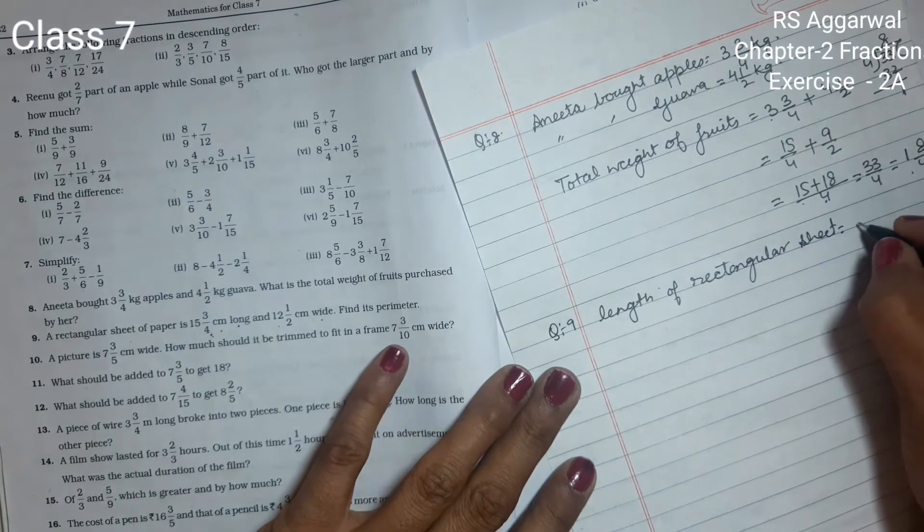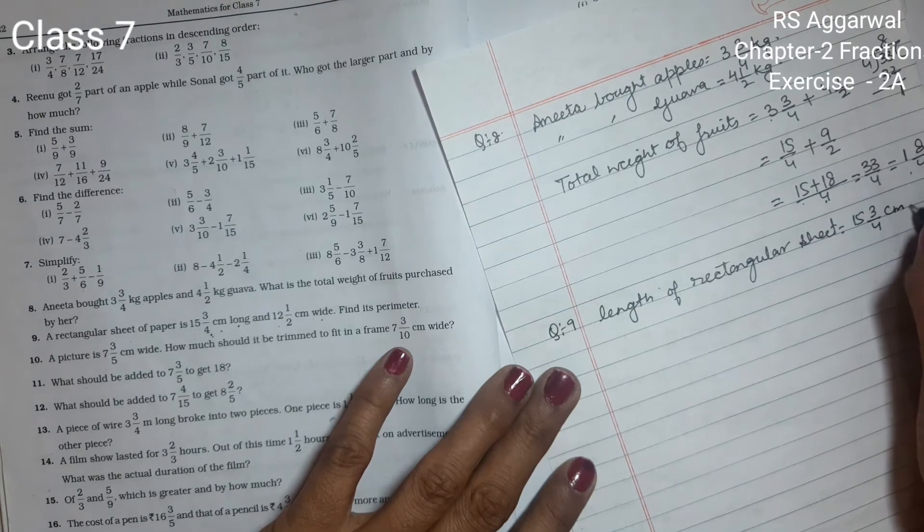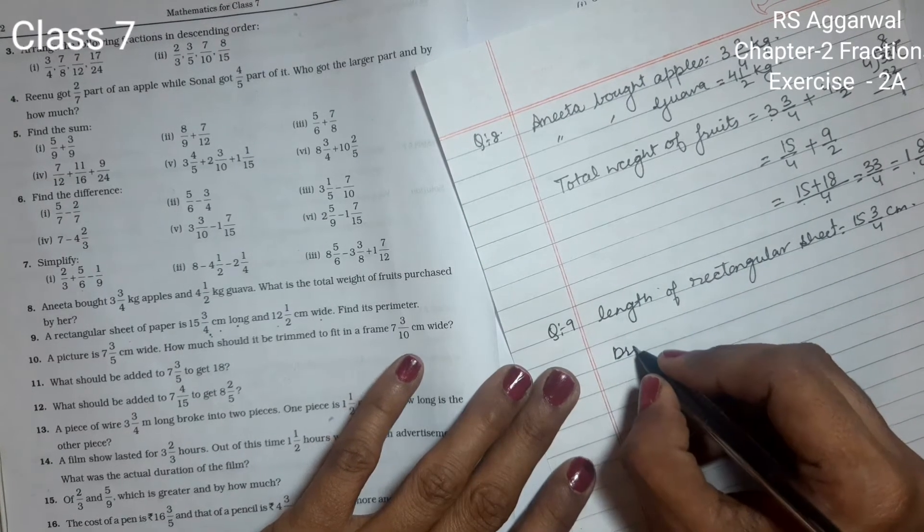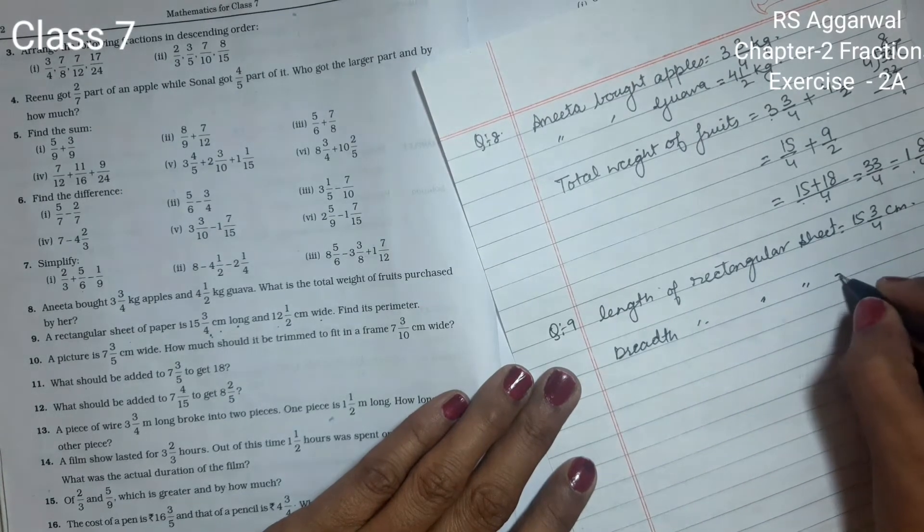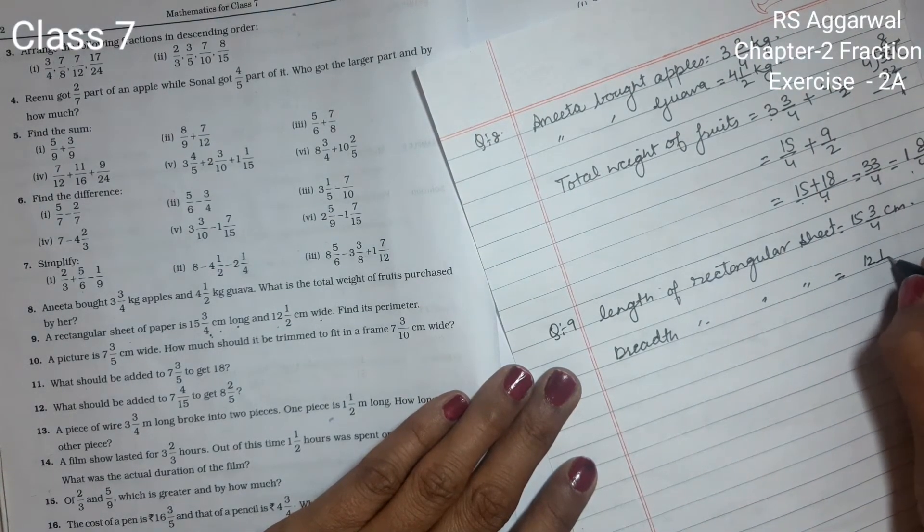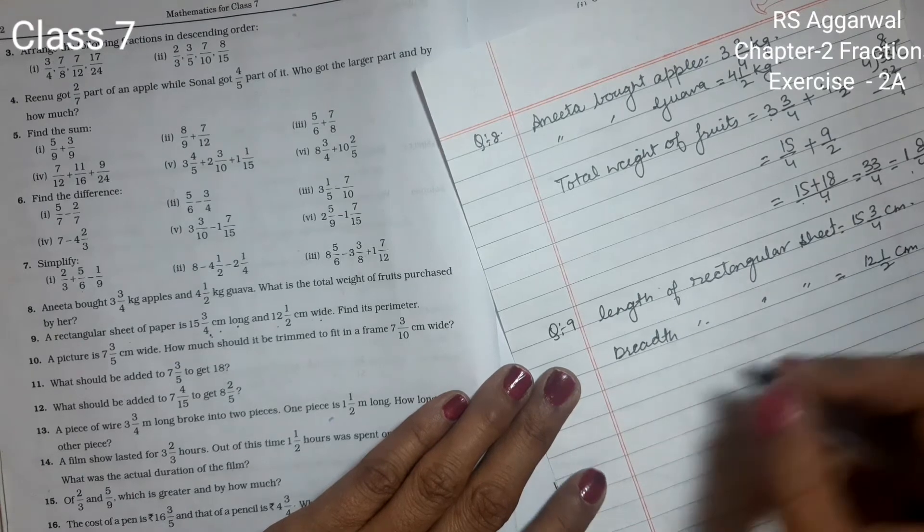Now we have to find its perimeter. Perimeter of rectangle equals 2 times (length plus breadth).